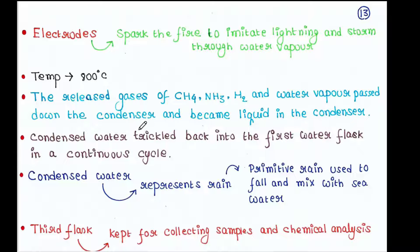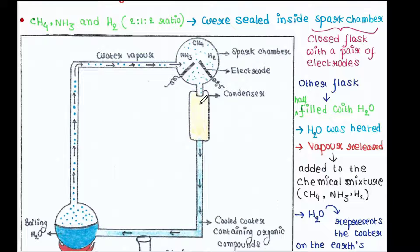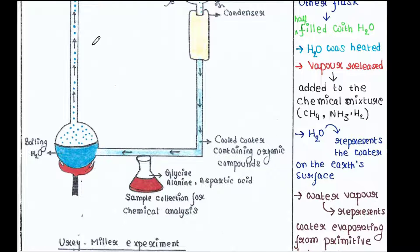Now, the released gases of methane, ammonia and hydrogen and water, that is, you can see the water vapor, passed down the condenser and became liquid in the condenser. Since condenser is cold, it aids in forming liquids from above gases and water vapor.